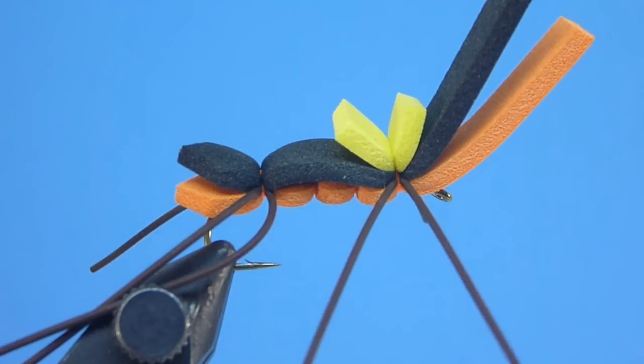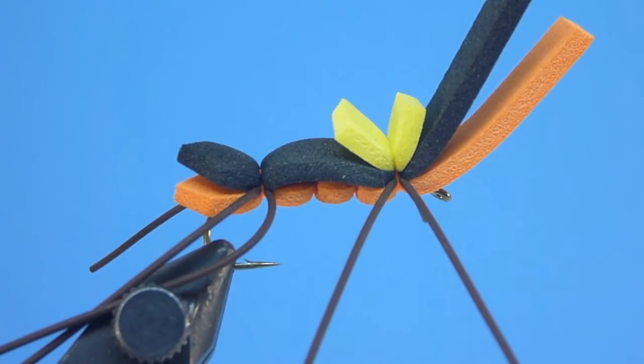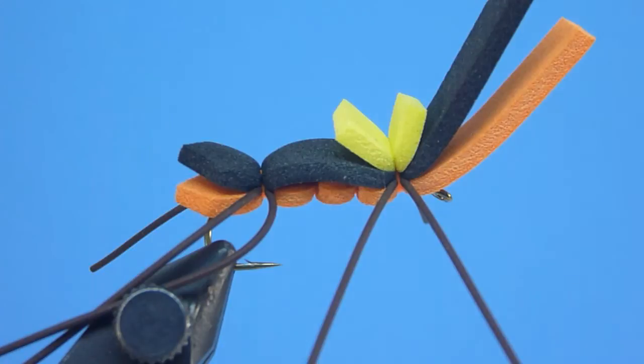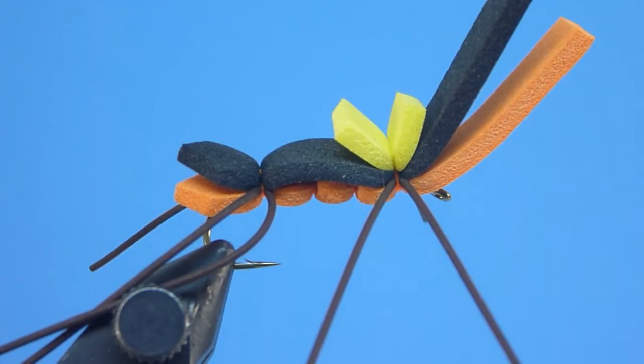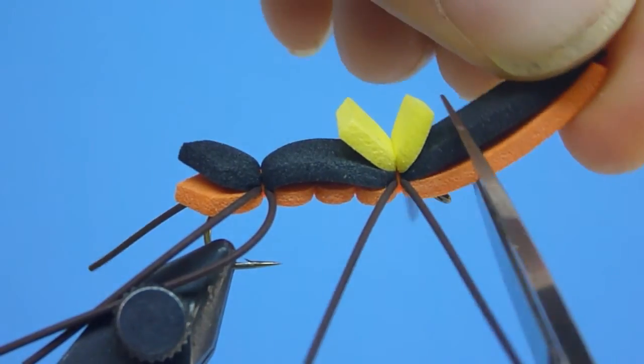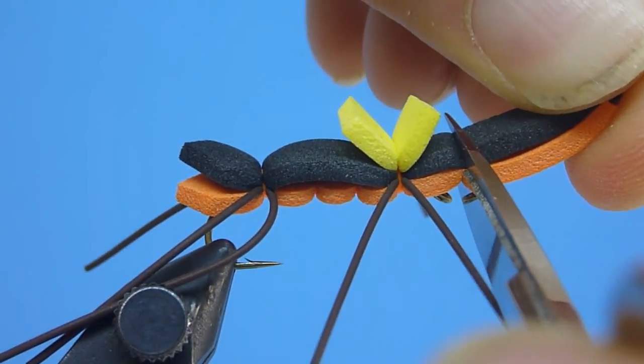With the excess thread cleanly removed, we can now give our ant a nice, neat, block-shaped head by trimming back squarely just a short distance in front of our hook eye, both the black and orange foam strips together with a single, crisp, smooth, straight-line cut of our scissors.